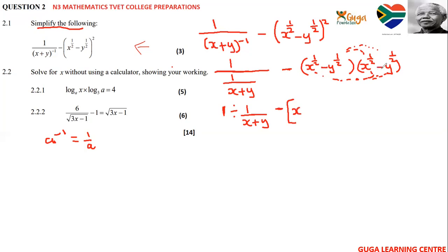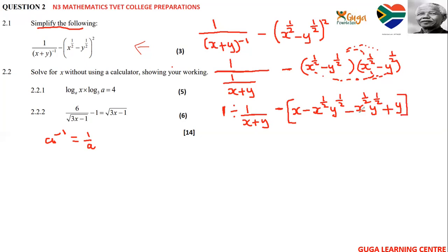Then x to the half multiplied by negative y to the half will give us negative x to the half y to the half. And then y to the half multiplied by negative y to the half will give us positive y. Now I put this in this fashion — I wanted it to be one — so I told you that when we have division, the numerator becomes the numerator, as you remember from N2.